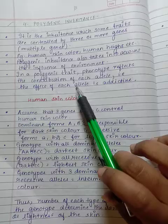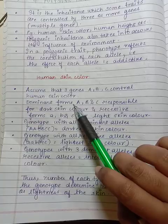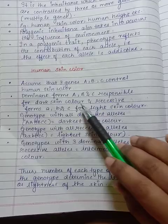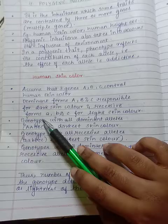Human skin color: Assume that three genes A, B, C control human skin color. Dominant forms A, B, and C are responsible for dark skin color, and the recessive forms, small a, b, c, are for light skin color. Genotype with all dominant alleles AABBCC are the darkest skin color.